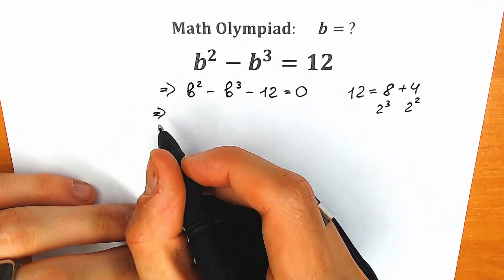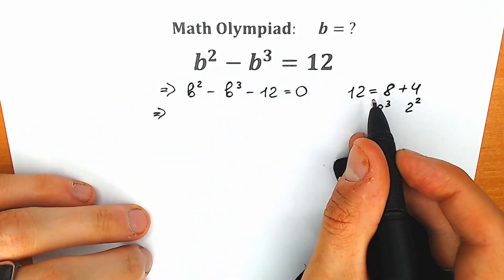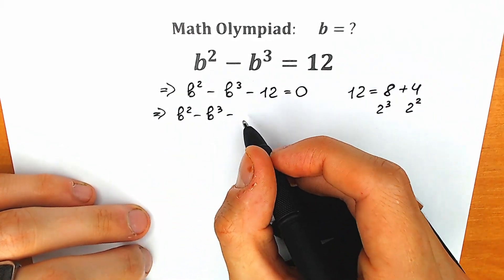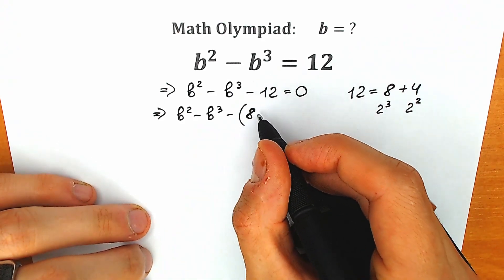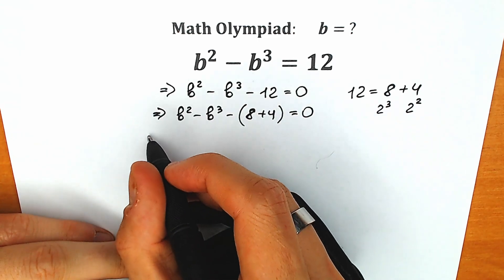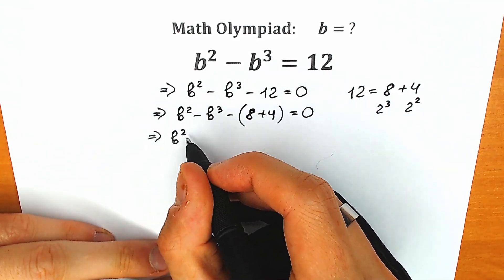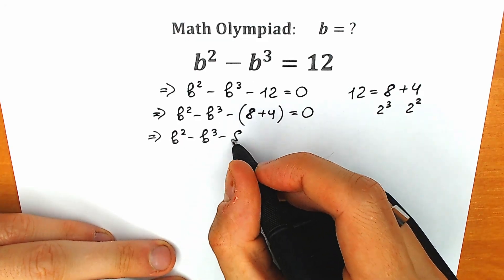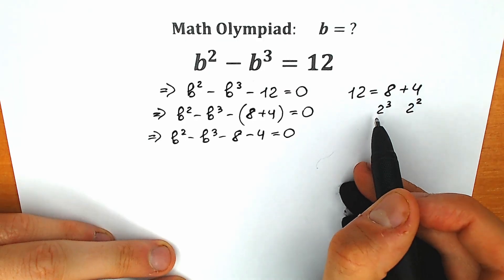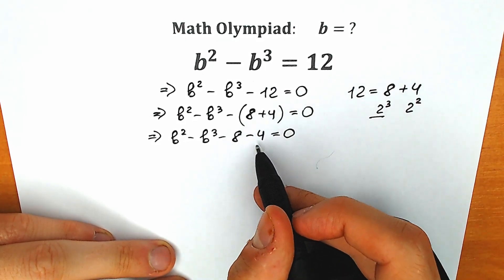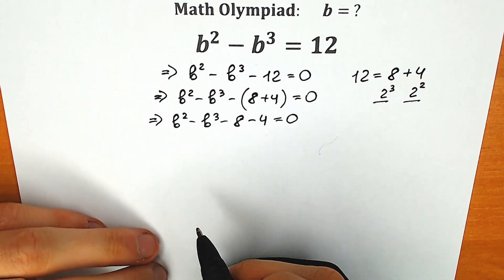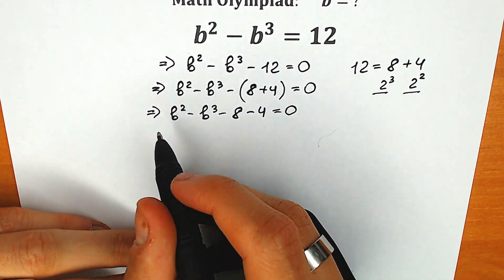So then we can easily group our cubes and squares, and work with formulas like sum of cubes or something like that. Let's express this 12 as 8 plus 4. So we have b² - b³, and 8 plus 4, equal to 0. The reason we choose this way is because 8 we can write as 2³ and 4 we can write as 2².